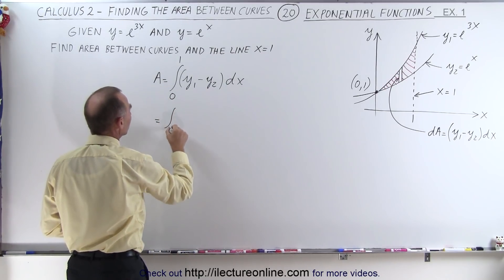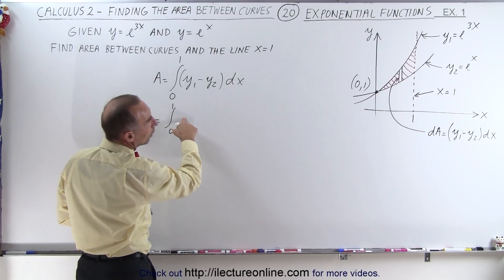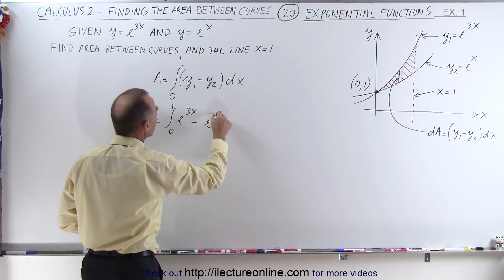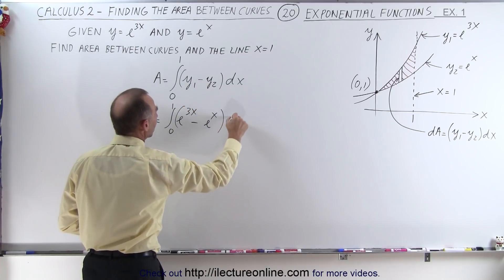So this is equal to the integral from 0 to 1. y1 is e to the 3x minus y2, which is e to the x, times dx.